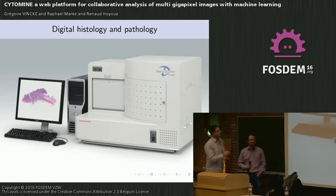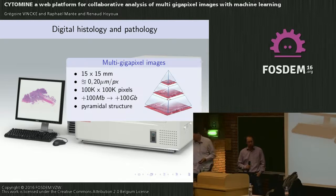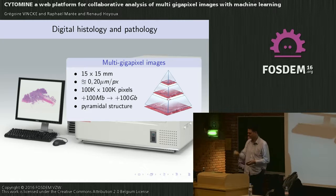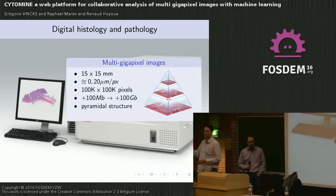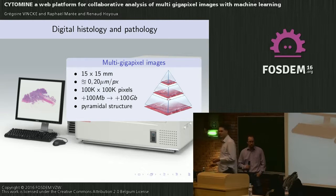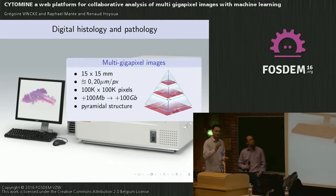Pathology and histology are moving to digital. Many research centers and hospitals are buying scanners which can produce what we call multi-gigapixel images. The area of the scan is very small — 15 by 15 millimeters — but the resolution is so high that files can be very big. We're speaking about files which can be more than 100 gigabytes for one scan, one image. So it's absolutely impossible to simply browse them on the web to allow collaborators or students to view them.